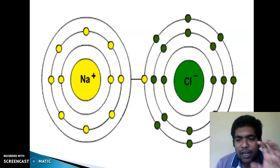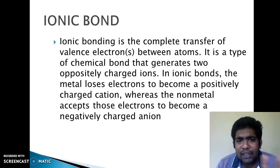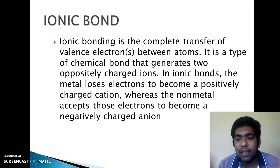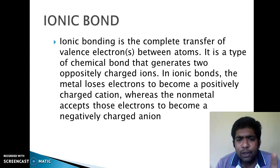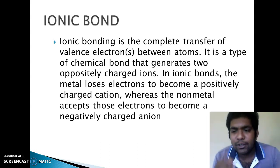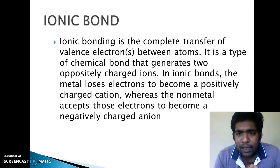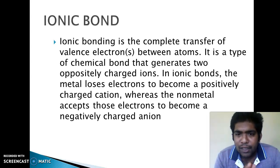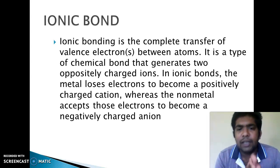It is the complete transfer of valence electrons between atoms. It is a type of chemical bond that generates two oppositely charged ions. In ionic bonds, the metal loses an electron to become positive, and the non-metal accepts an electron to become negatively charged.